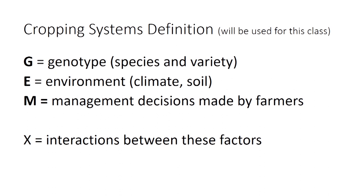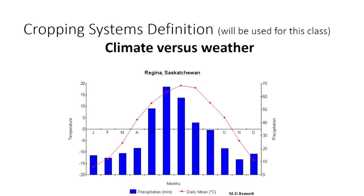Then we have management, which is all the things a farmer can control. The most important aspect of the G by E by M framework is the interactions — the X. Because genotype will interact with environment, with management, and on and on. We have interactions between these, and I'll give you some examples of how these interactions work later.